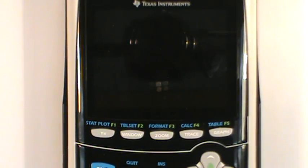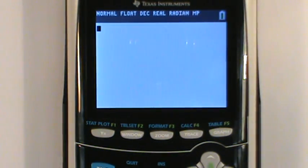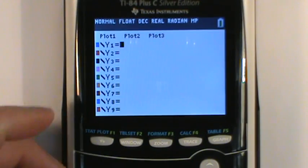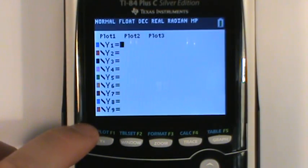On my graphing calculator, I want to turn the thing on. I'm just going to hit the y equals. The y equal is your equation editor. And you'll notice that it allows me to put all these different equations in here.